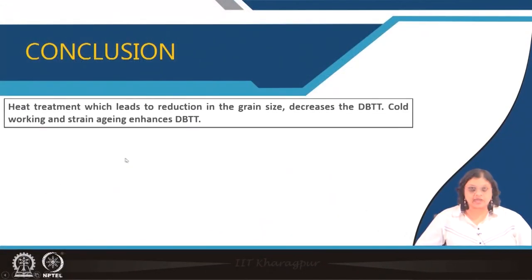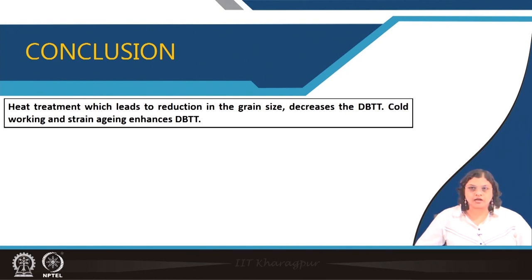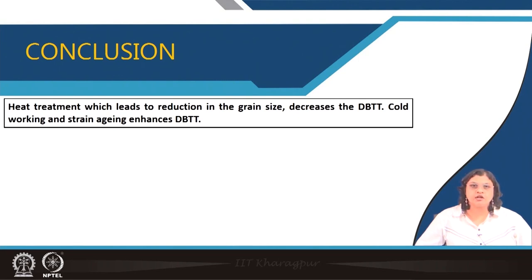In conclusion, any kind of heat treatment that leads to grain refinement has a positive effect and leads to reduction in the ductile to brittle transition temperature. Hot rolling at a comparatively lower temperature, performing normalizing treatment after hot rolling, or cooling at a higher rate after normalizing can all refine the grain size and reduce the DBTT. On the other hand, cold working or any aging treatment that coarsens the grain structure leads to an enhancement in the ductile to brittle transition temperature.